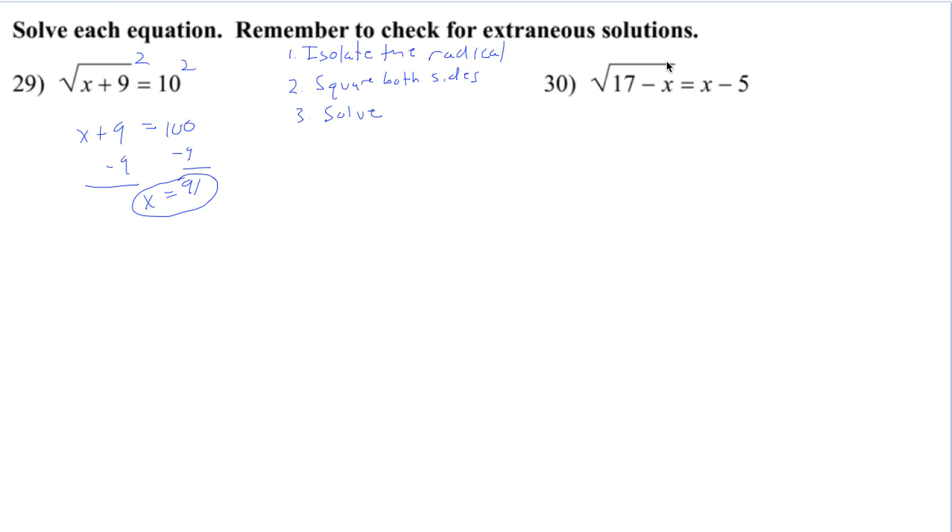Coming over to 30, it's going to be a little bit different because we have a variable here on the right, but we still follow the same process. Isolate the radical. It is isolated already. Square both sides. We're going to square both sides here.